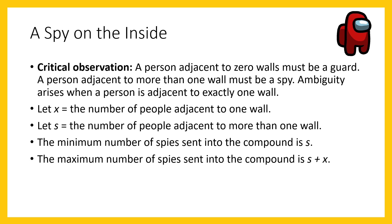The solution is to iterate through every person in the grid, obtain the number of walls they're adjacent to. Let x be the number of people adjacent to exactly one wall and s be the number adjacent to more than one wall. The people adjacent to more than one wall are definitely spies, so the minimum number of spies is s. The maximum assumes all one-wall-adjacent people are also spies, giving s plus x.